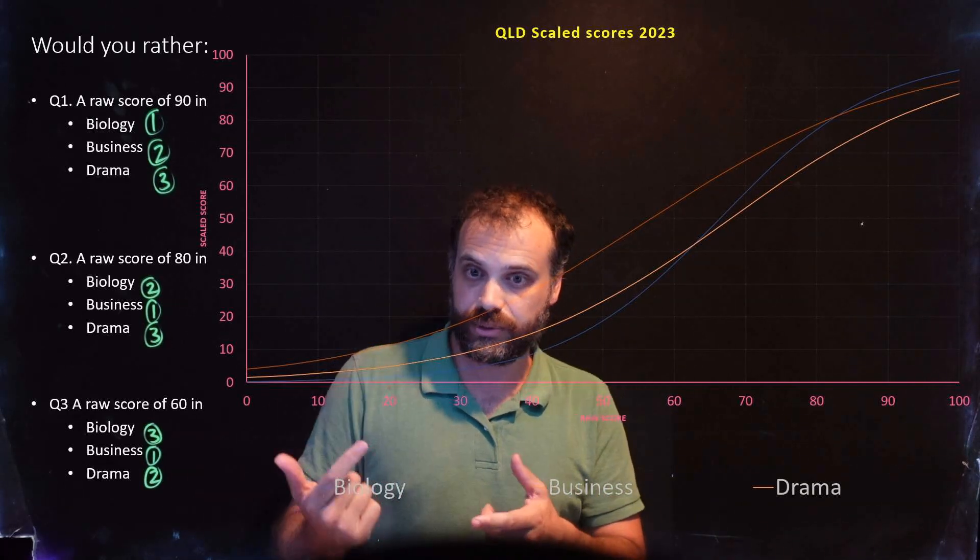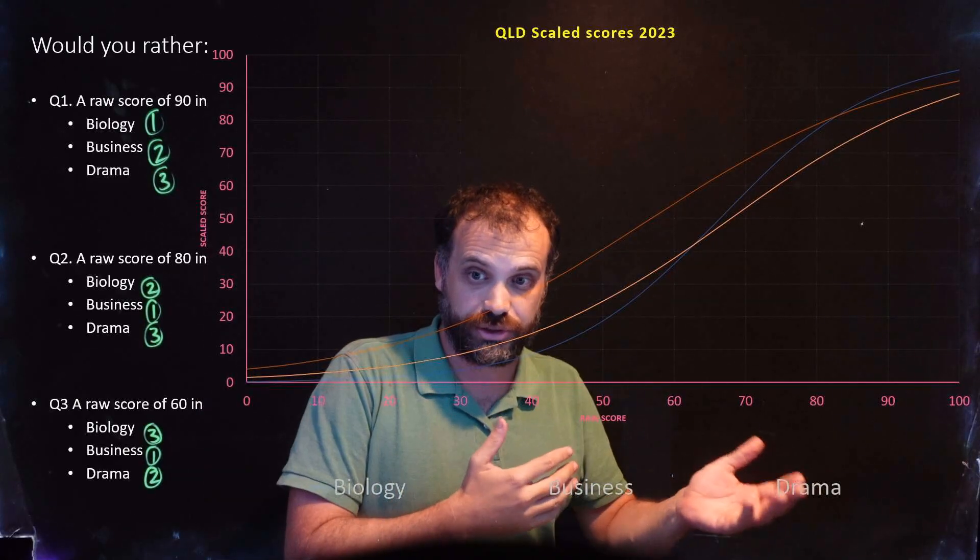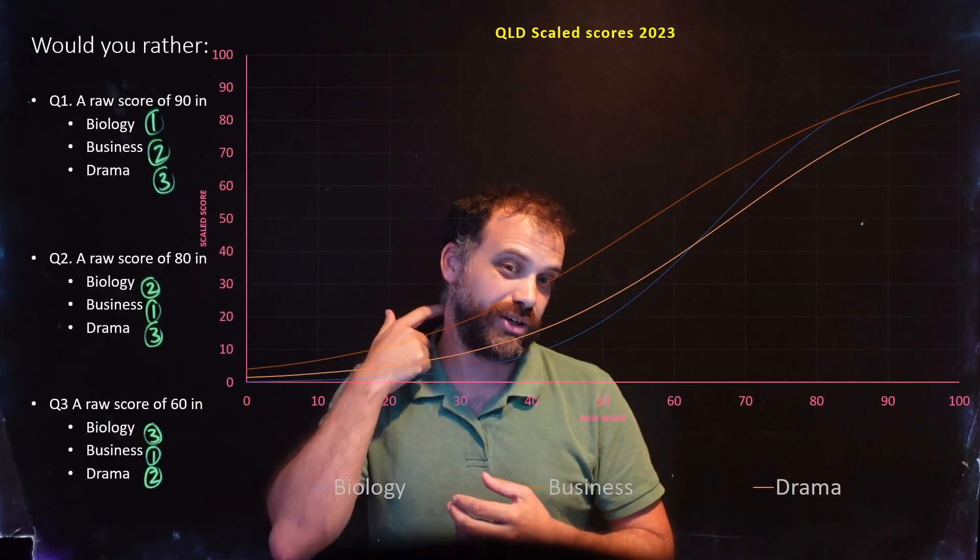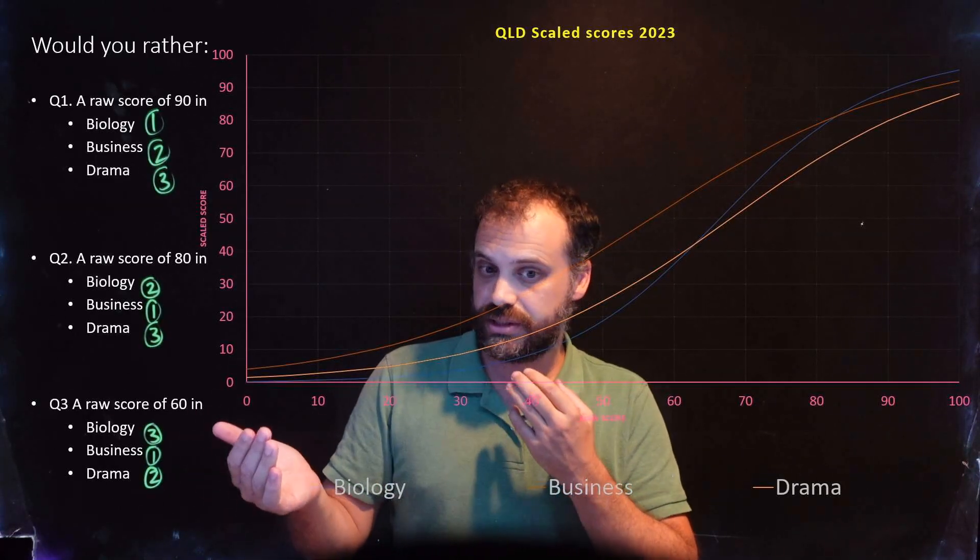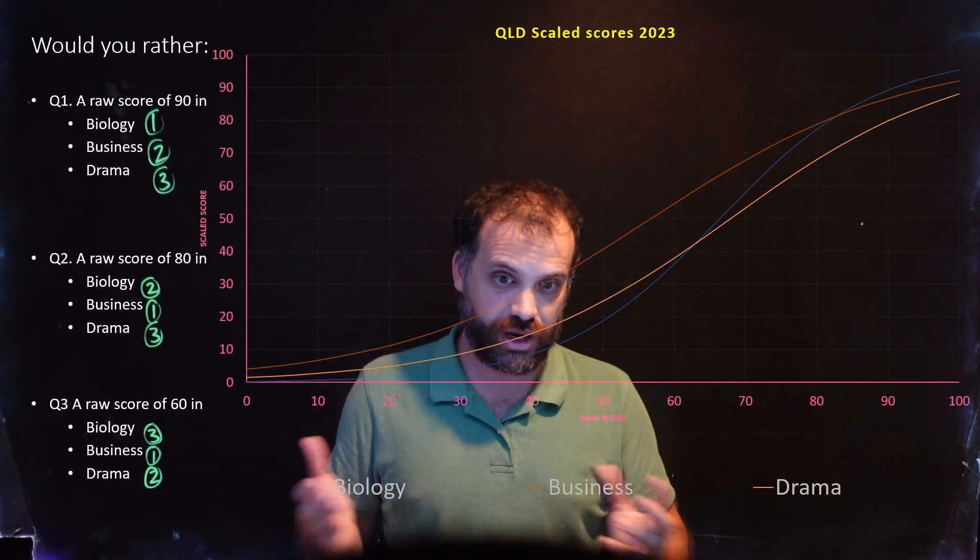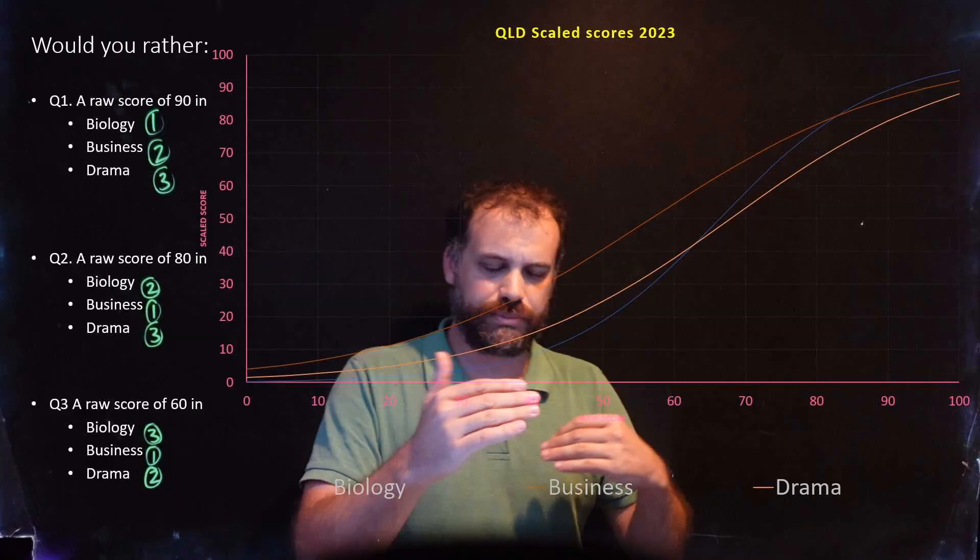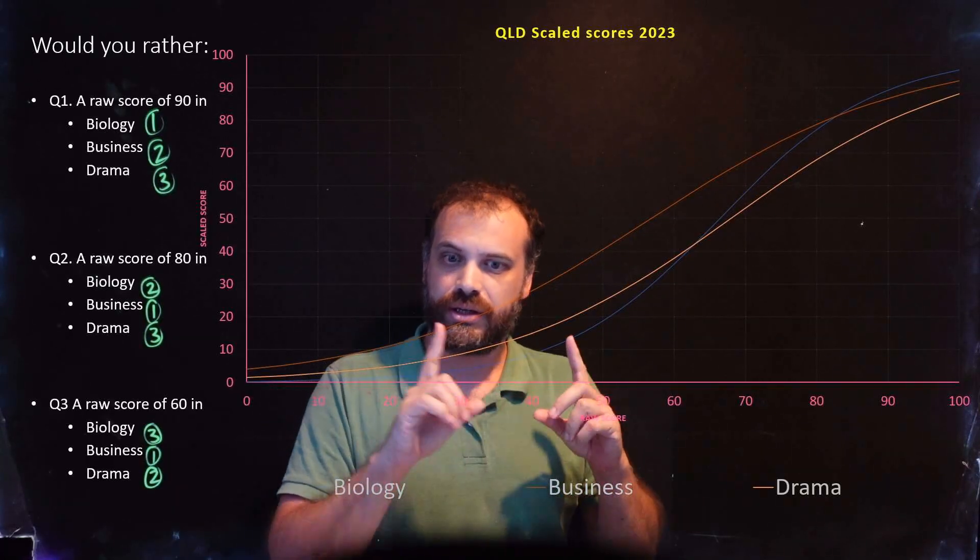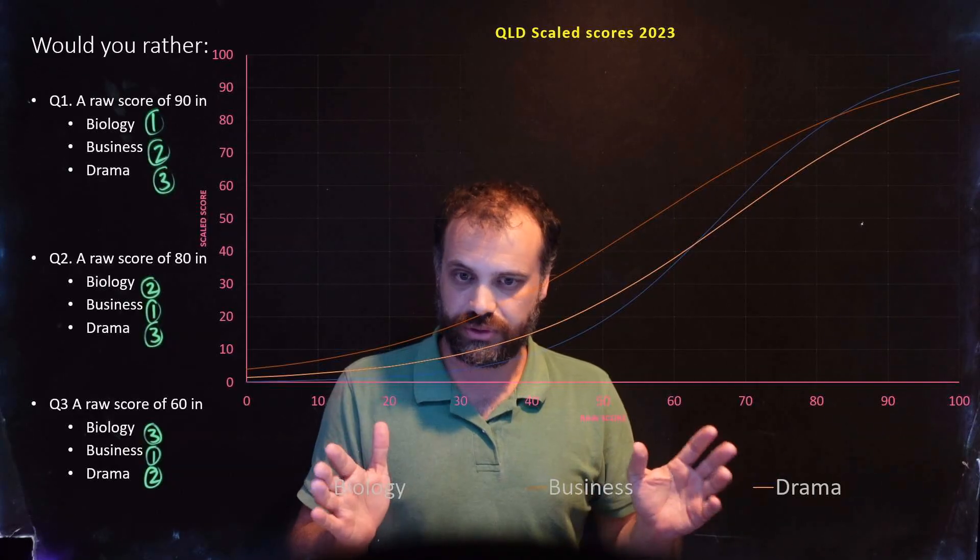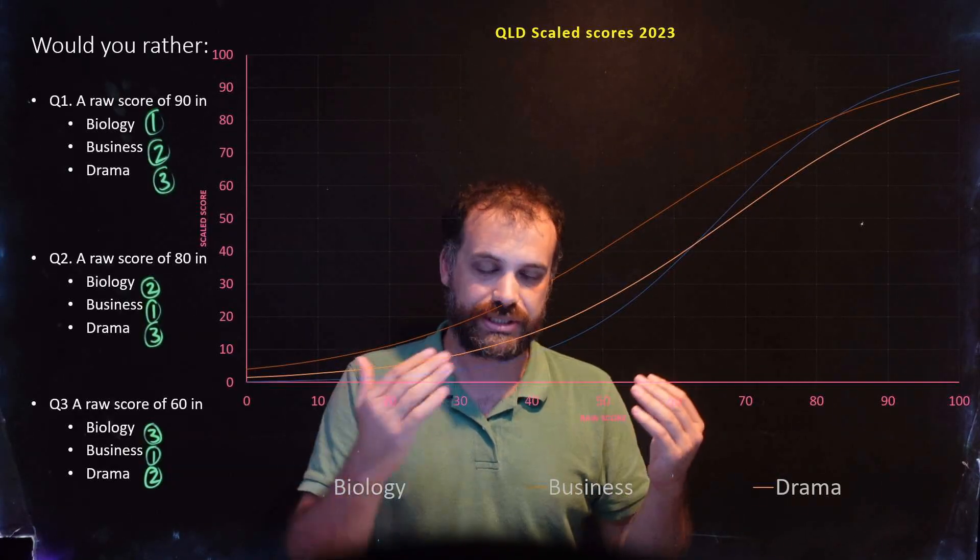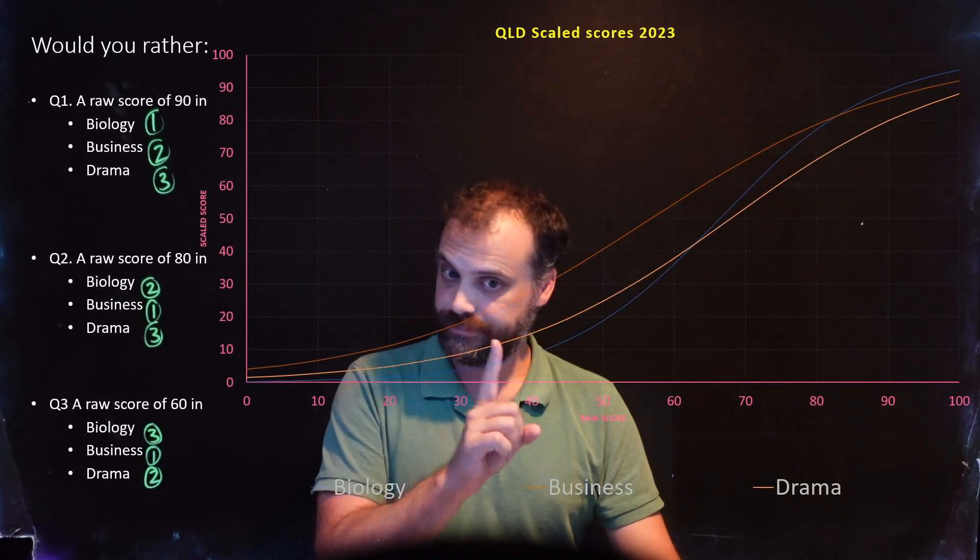So as you can see, the answer to which one scales up really depends on what sort of score you think you're going to get in those subjects. If you think you are equally capable of getting a 90 in biology, business, or drama, then I guess do biology. If you think, hang on, I can only really get a 60 if I do any of these subjects, then don't do biology, do business. And as a second choice, do drama. Biology does not scale above all of these subjects across all of these numbers. That's not true.